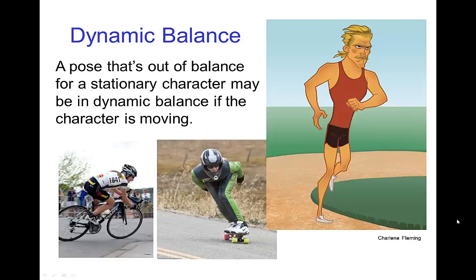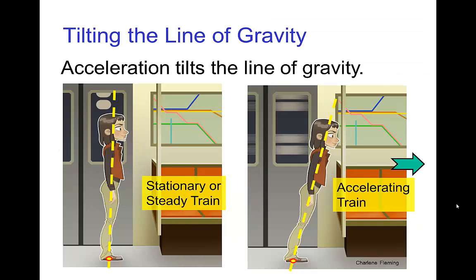Dynamic Balance. A pose that would be out of balance for a stationary character could be in balance when the character is moving. Let's start with a simple example of how this works. If the character is standing on a train and the train is moving at a constant speed, or the train is just sitting still, then the line of gravity goes straight up and down.